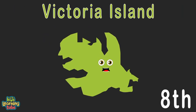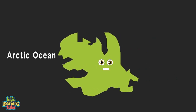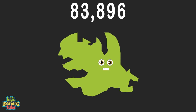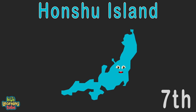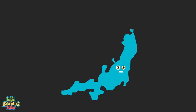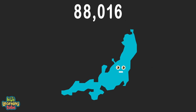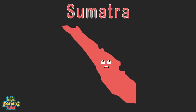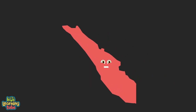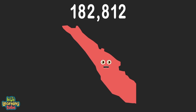I'm Victoria Island, split between the Northwest Territory and Nunavut, in the Arctic Ocean and part of Canada, at 83,896 square miles. I'm Honshu Island, located in Japan — the country's main island. I touch the Sea of Japan and the North Pacific, with 88,016 square miles. I'm the island of Sumatra in Indonesia — the largest island in this country. I touch the northeast Indian Ocean at 182,812 square miles.